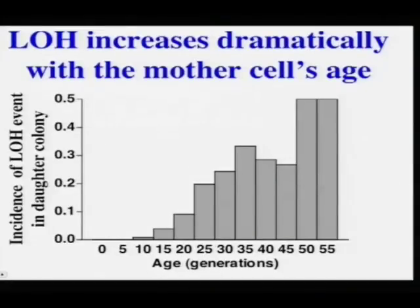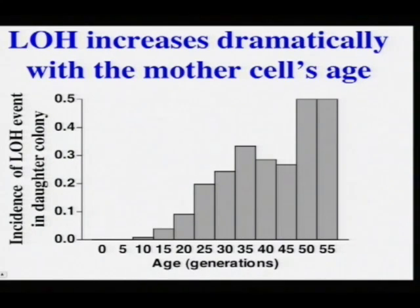We set up a system in which we looked at genomic instability as something called loss of heterozygosity, or LOH, as a function of age. Basically, early on we found that there was low incidence of LOH in yeast cells, but as the cells aged, there was a higher probability that they would give rise to cells with LOH in them.